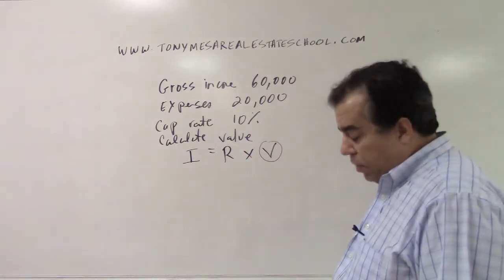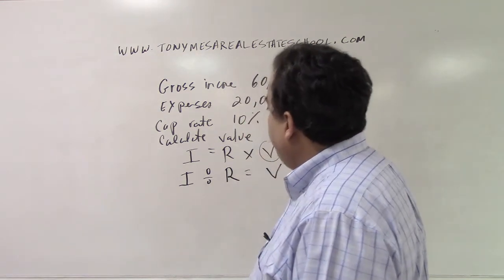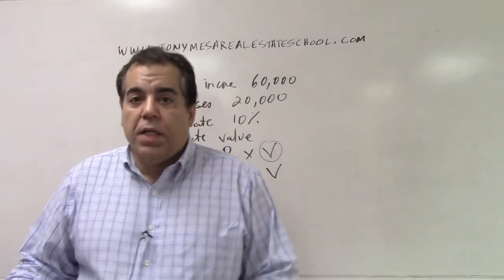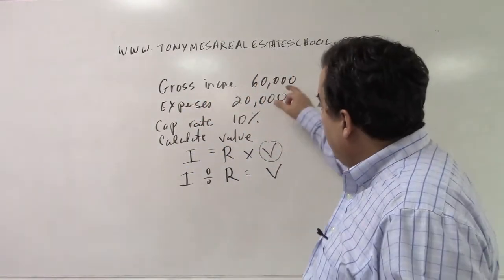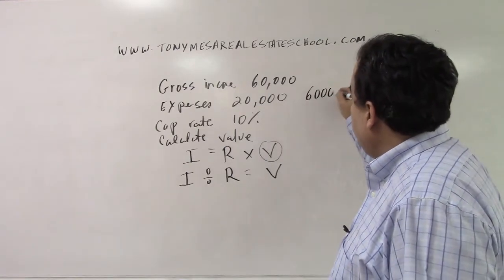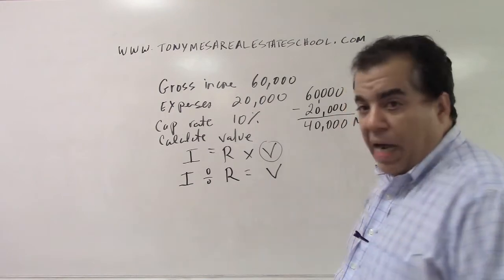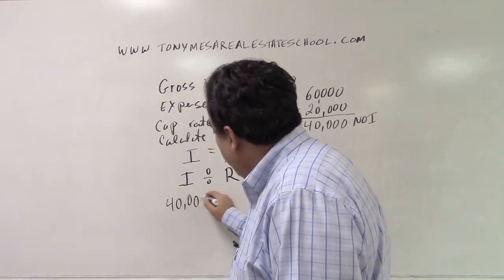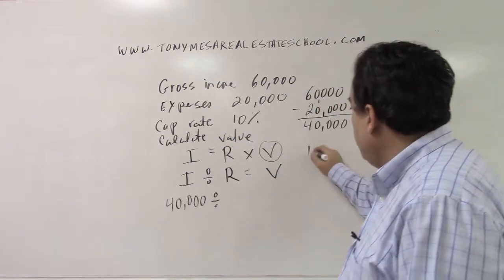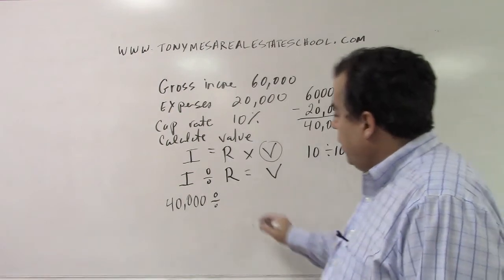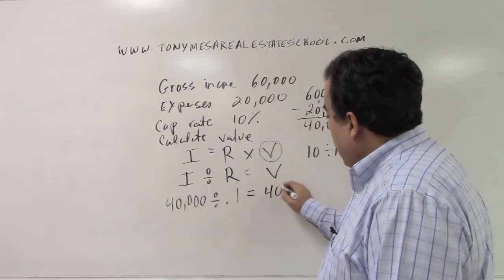I'm trying to get the value, so I need V alone on one side: I ÷ R = V. The I in Irv the Appraiser is the net operating income. Gross income of $60,000 minus expenses of $20,000 leaves $40,000 as the NOI. The cap rate must be a decimal: 10 ÷ 100 = 0.1. So $40,000 ÷ 0.1 gives us $400,000 as the value.